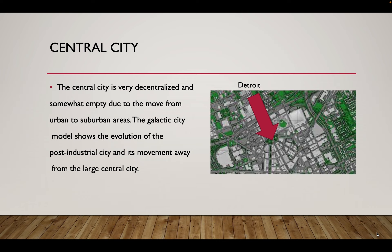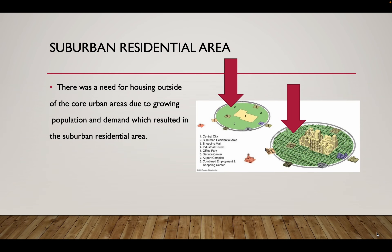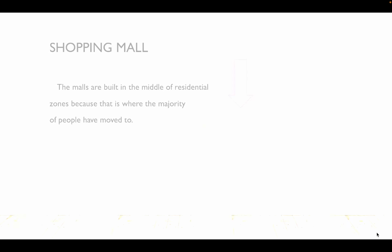The central city is very decentralized and somewhat empty due to the move from urban to suburban areas. There was a need for housing outside the core urban areas due to growing population demand, which resulted in the suburban residential area.